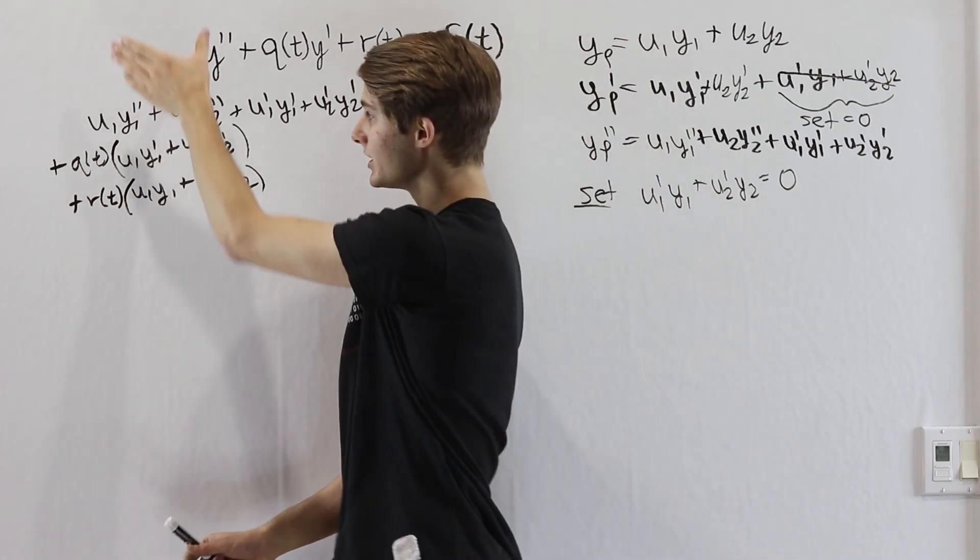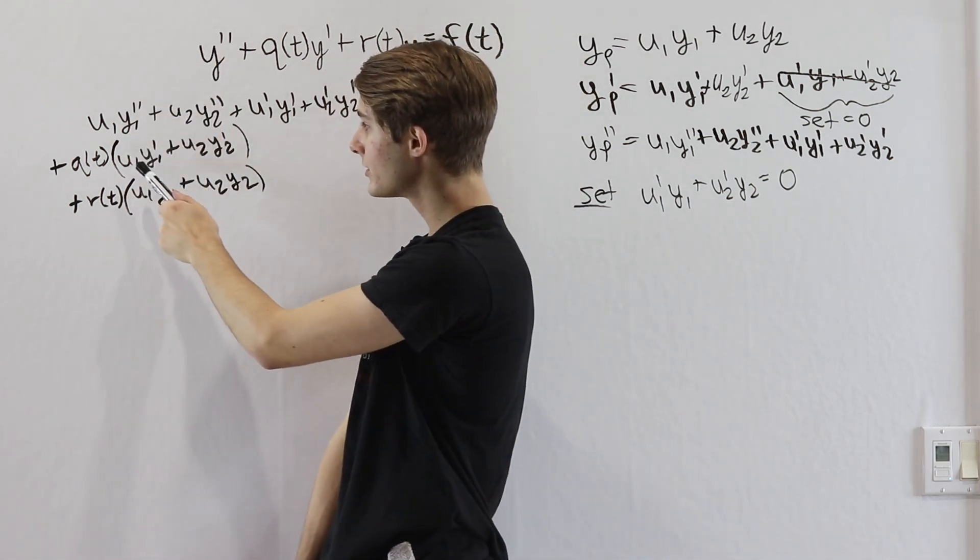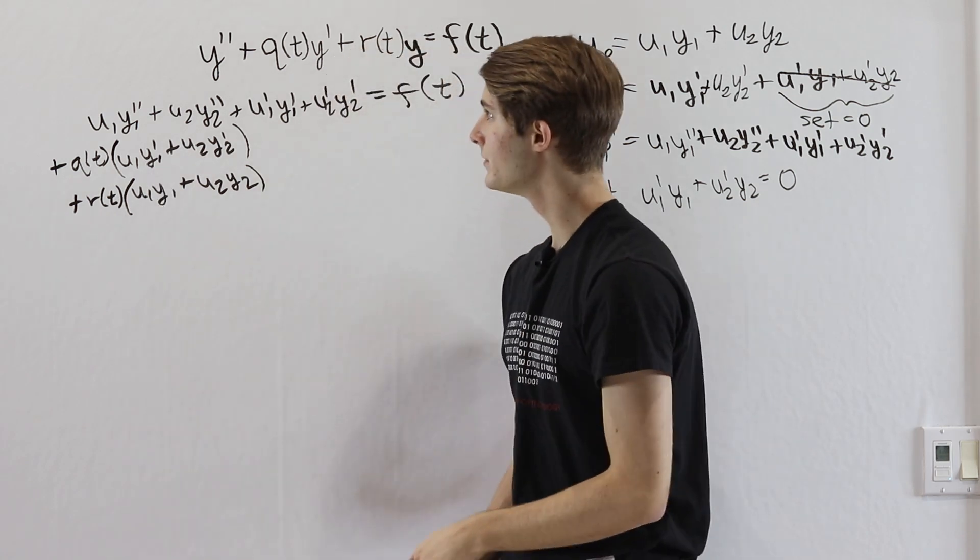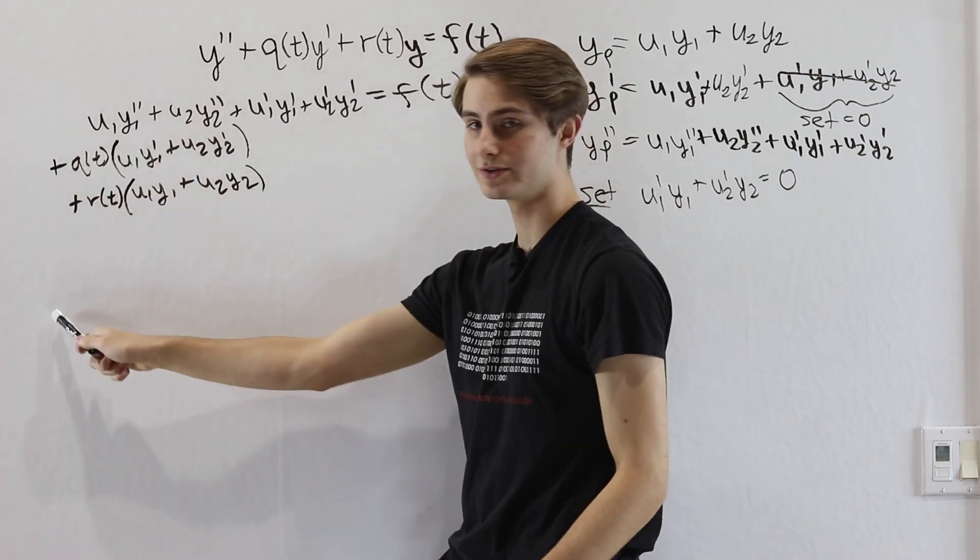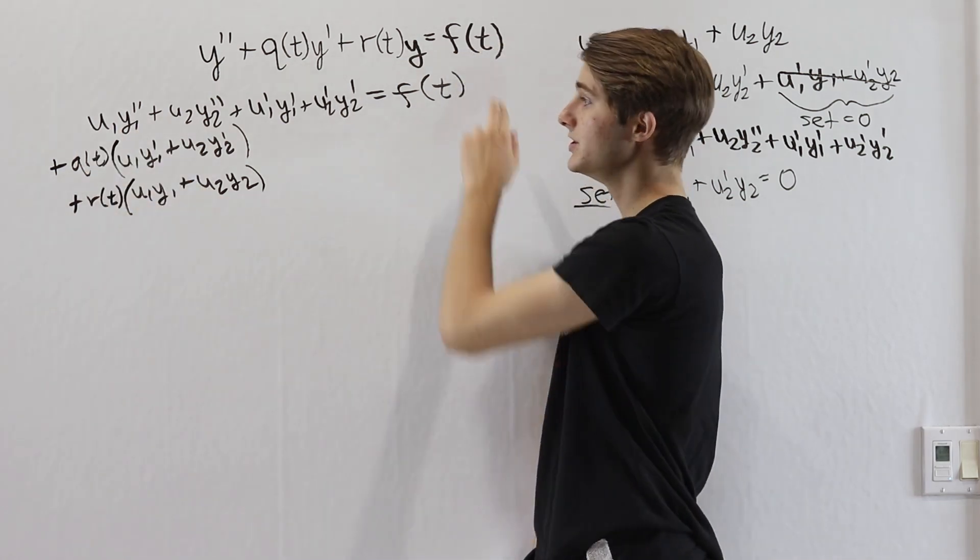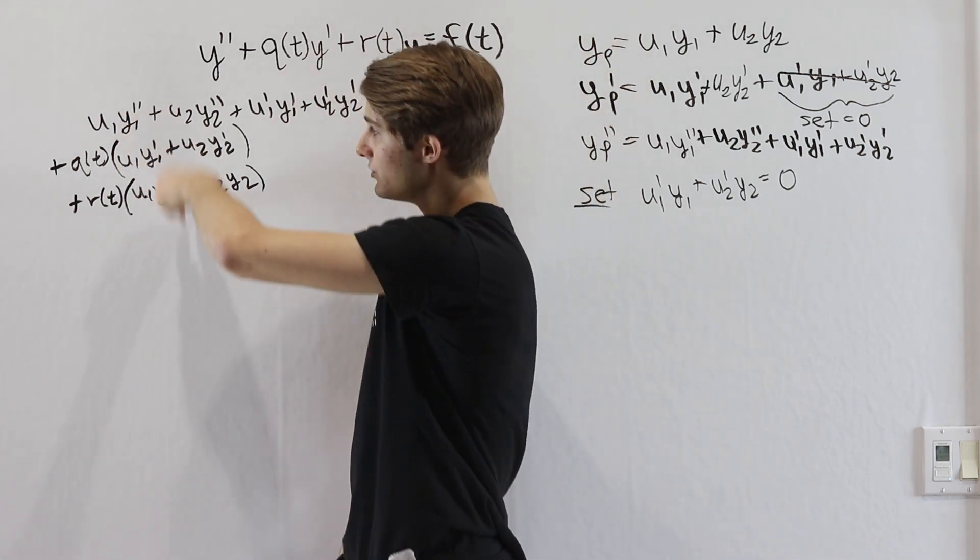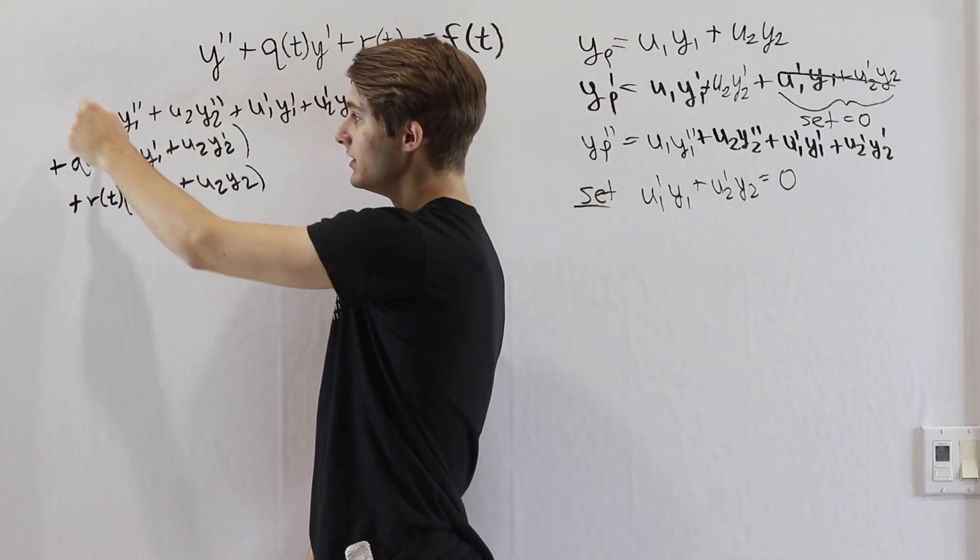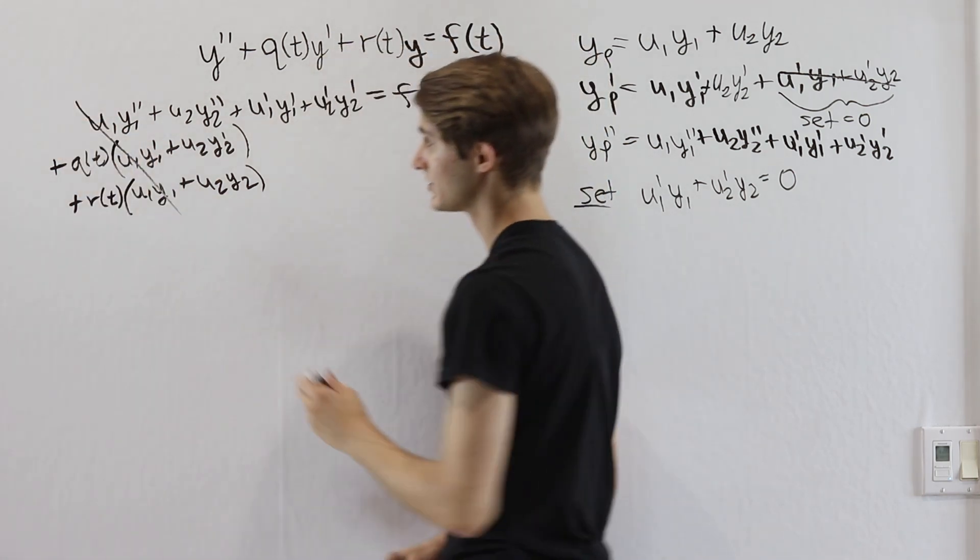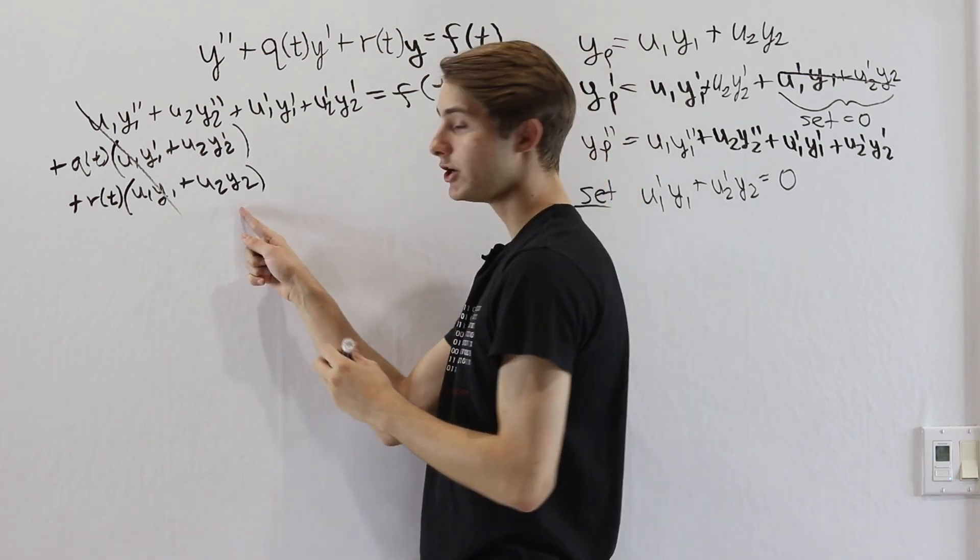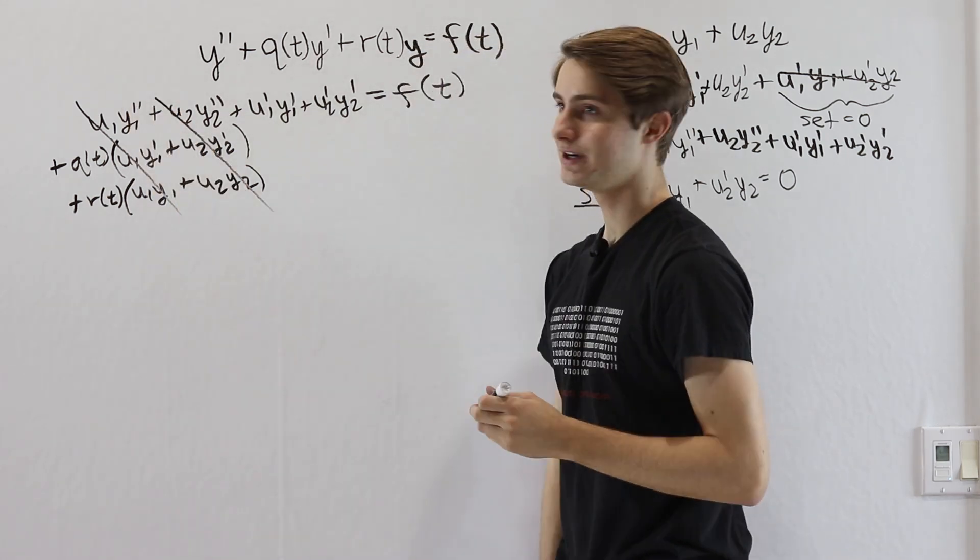Now when we take a look at these columns on the left side, when we plug in y1 double prime, y1 prime, and y1 into our 1, q(t), r(t) coefficients over here, that's going to give us 0 because y1 is a homogeneous solution, and we're multiplying all of these y1's by the same multiple u1. So this whole column is going to cancel out, and for the exact same reason, the column of y2, another homogeneous solution, is also going to cancel out.